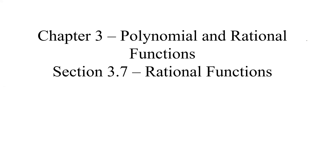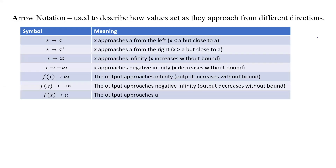Here we are in chapter 3 on polynomial and rational functions, and this is 3.7 on rational functions. We're going to start using arrow notation, which is used to describe how values act as they approach from different directions. We have symbols and their meanings — for example, as x approaches a from the left, that means x is less than a.